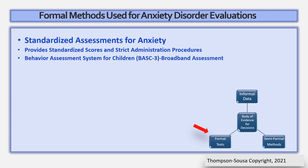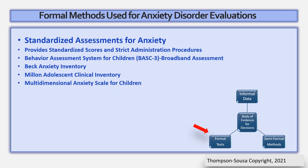There are several well-known formal methods one can use in an anxiety disorder evaluation. One of these assessments is called the Behavioral Assessment System for Children, better known as the BASC-3. The BASC-3 is a broadband assessment, meaning that it assesses not only for anxiety, but depression, ADHD, and other social-emotional issues as well. There are also targeted assessments one can use, including the Beck Anxiety Inventory, the Millon Adolescent Clinical Inventory, the Multi-Dimensional Anxiety Scale for Children, and the Revised Children's Manifest Anxiety Scales, Second Edition. It should be noted that many of these assessments have multiple editions associated with them.